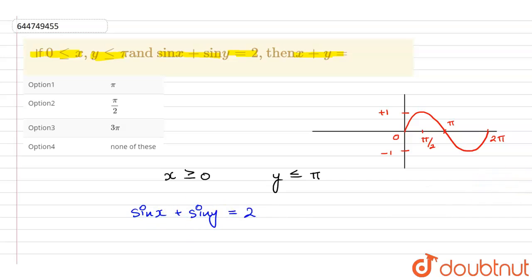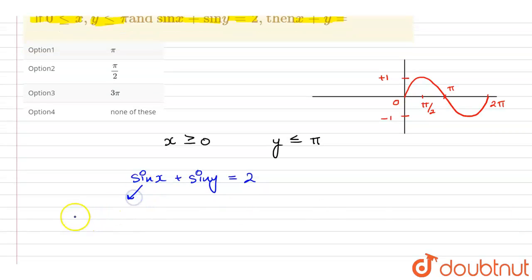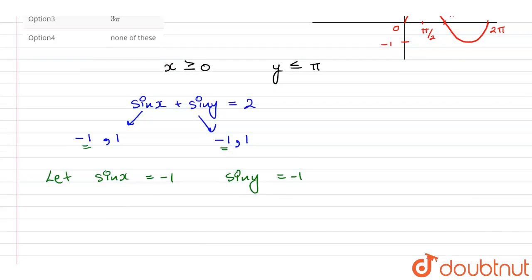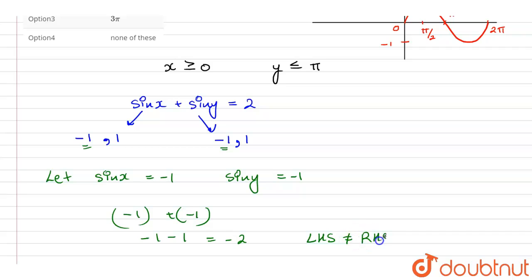The value of sin x can range from minus 1 to 1, and similarly the value of sin y can also range from minus 1 to 1. Now, if we take the value of sin x as minus 1 and sin y as minus 1, this will be minus 1 plus minus 1, which equals minus 2. That means LHS is not equal to RHS.